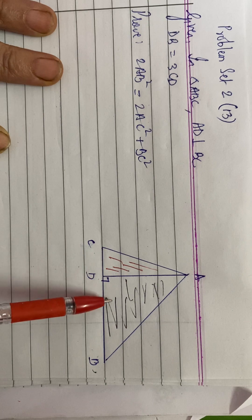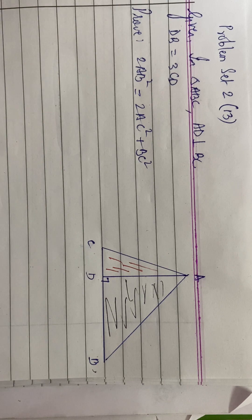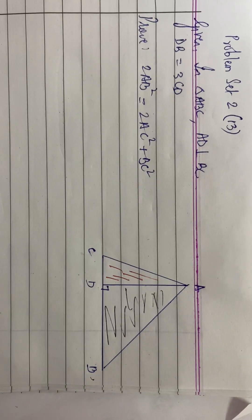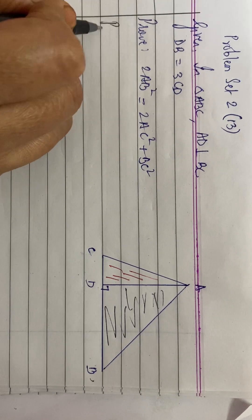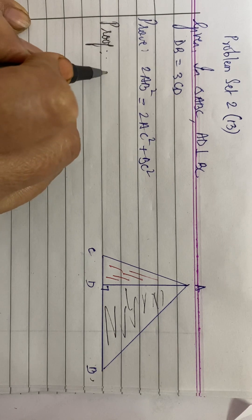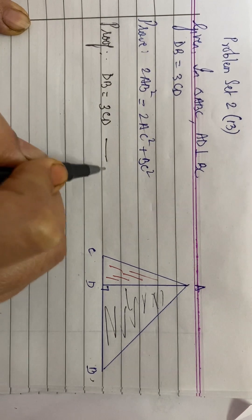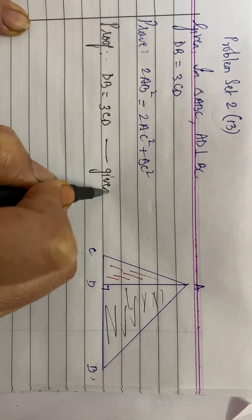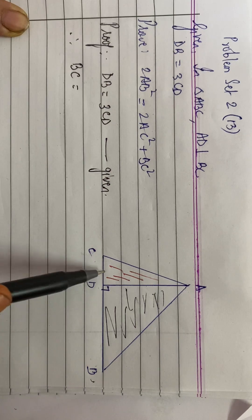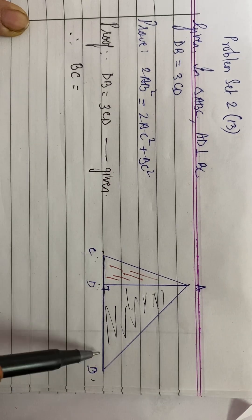We are going to apply Pythagoras theorem for these two triangles. Before we begin, let us use the relationship given to us: DB is thrice CD. Therefore, BC will be equal to CD plus DB.